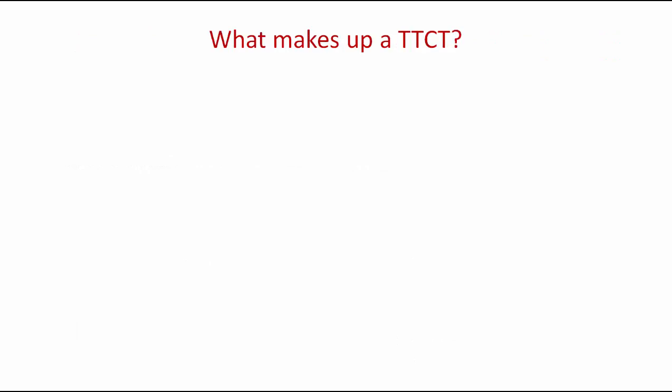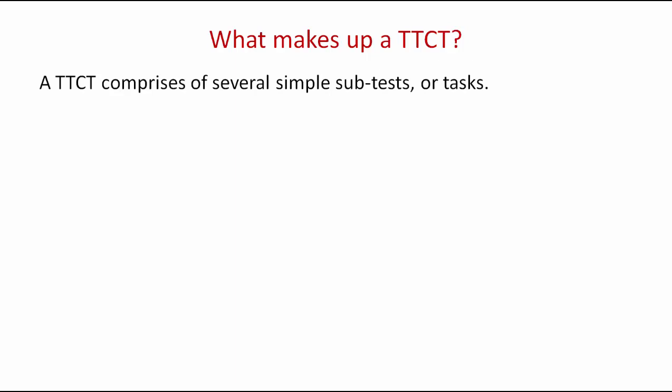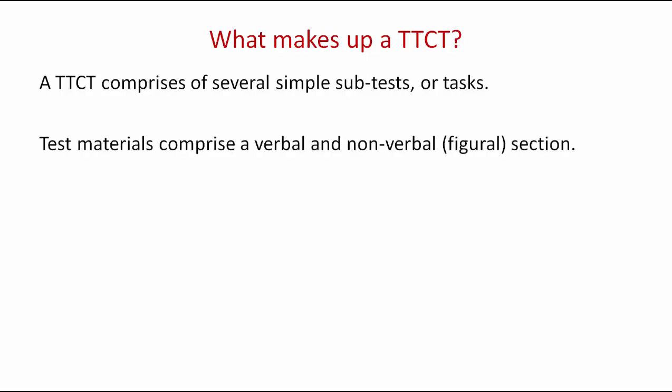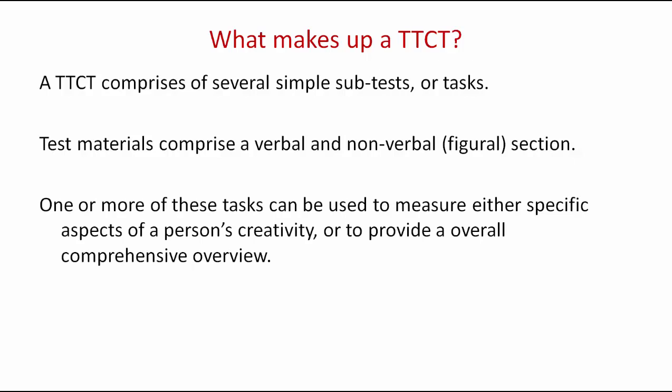Now that we know what the Torrance Test of Creative Thinking is actually used for, we need to understand how it is actually carried out to measure a person's creativity. A Torrance Test of Creative Thinking comprises several simple subtasks or tasks which make up the overall test. The test material is comprised of two sections, both a verbal and a non-verbal, or sometimes called figural, section. One or more of these tasks can be used to measure either specific aspects of a person's creativity or to provide an overall comprehensive overview of that person's creativity.